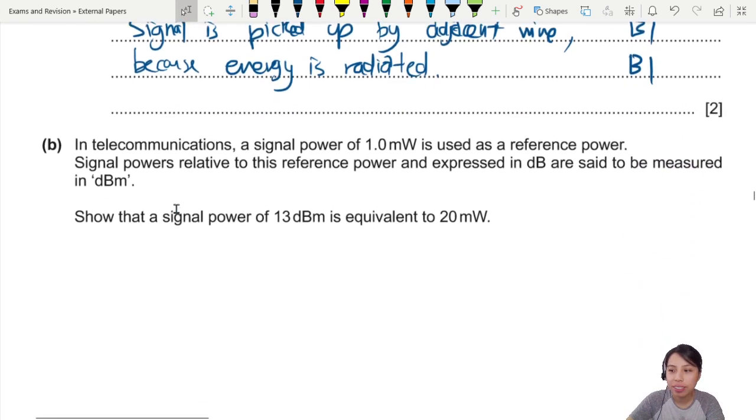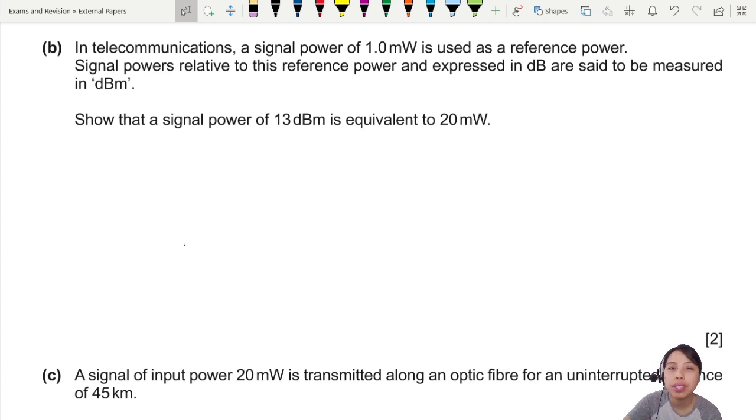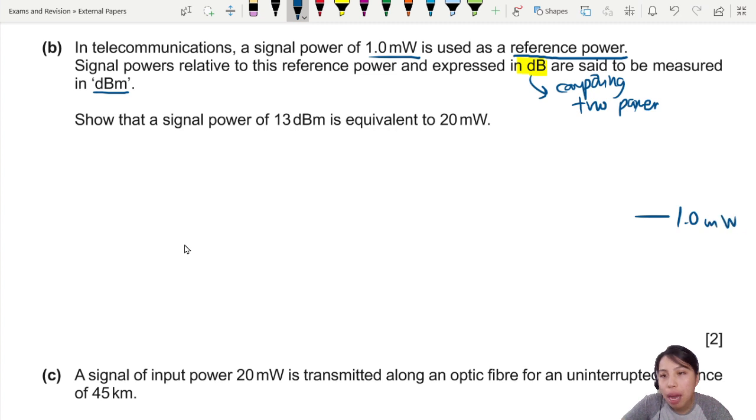Now on to the calculation. In telecommunication, a signal power of 1.0 milliwatt is used as a reference power. Signal powers relative to this reference power expressed in dB have a special name called dBm. Show that a signal power of 13 dBm is equivalent to 20 milliwatts. The main thing you need to remember about this dB ratio is that you are comparing between two powers. I need to compare it with something, the lowest level.